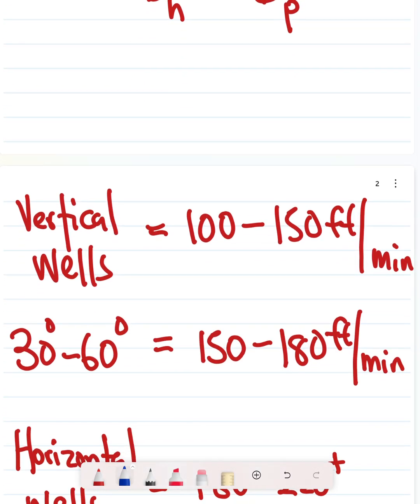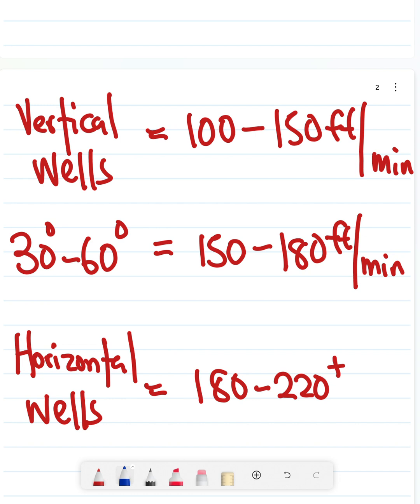So for vertical wells, you always want it to be between 100 and 150 foot per minute. This is because it takes a while before your cuttings drop down to bottom if you're not circulating at a very high rate.